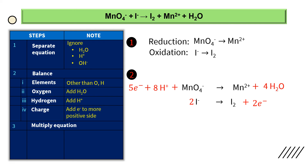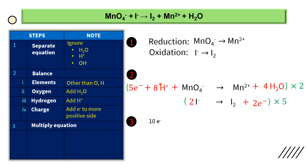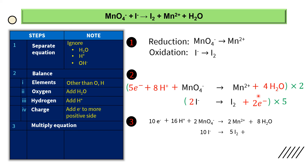Step 3: multiply the equations so that the number of electrons becomes equal. The first equation has 5 electrons and the second has 2 electrons. We multiply the first half equation by 2 and the second by 5, so both give 10 electrons. First half equation ×2: 10e⁻ + 16H+ + 2MnO4⁻ → 2Mn2+ + 8H2O. Second half equation ×5: 10I⁻ → 5I2 + 10e⁻.